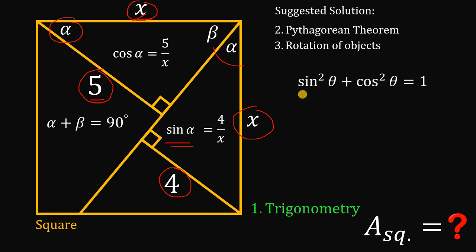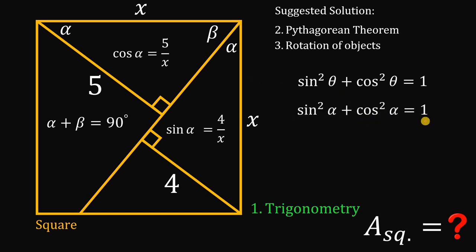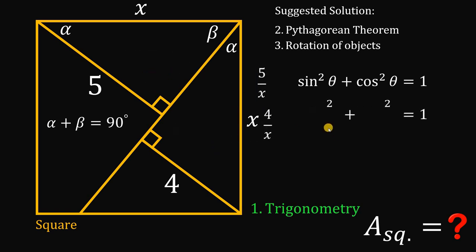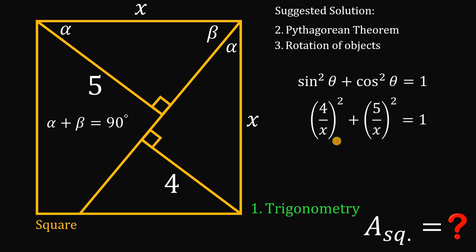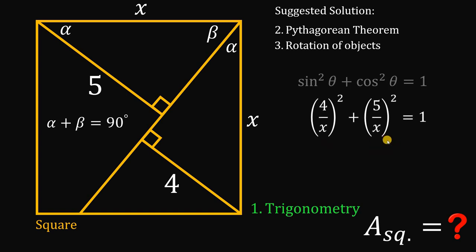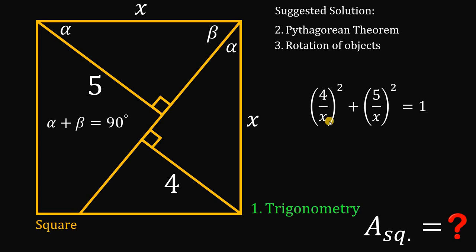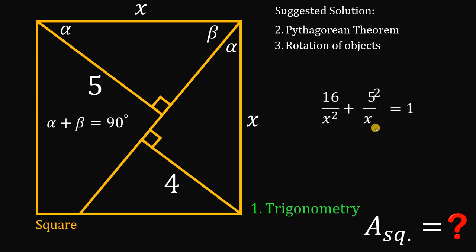Take note of the Pythagorean identity: sine squared theta plus cosine squared theta equals 1. So sine squared alpha plus cosine squared alpha equals 1. We know sine alpha equals 4 over x and cosine alpha equals 5 over x, so we substitute those in. We get (4/x)² plus (5/x)² equals 1, which is 16 over x squared plus 25 over x squared equals 1.